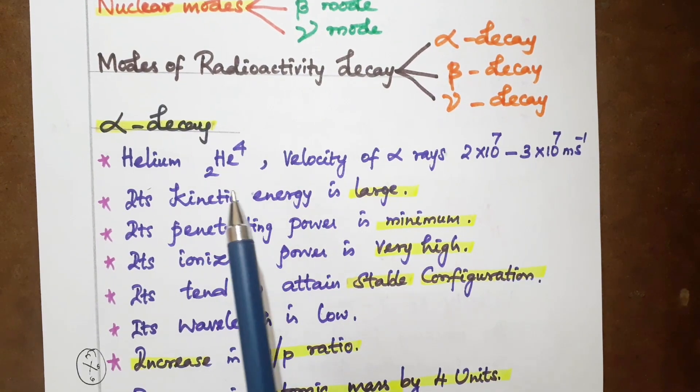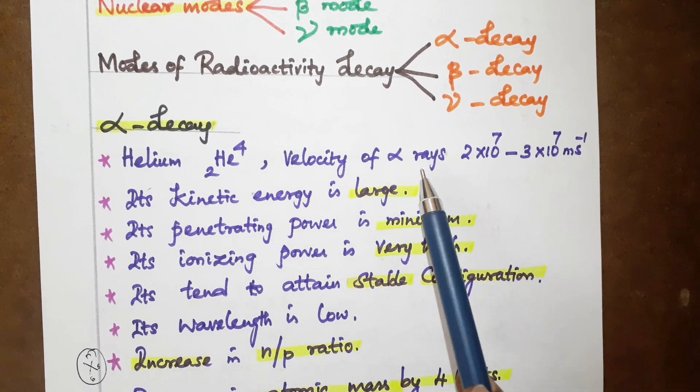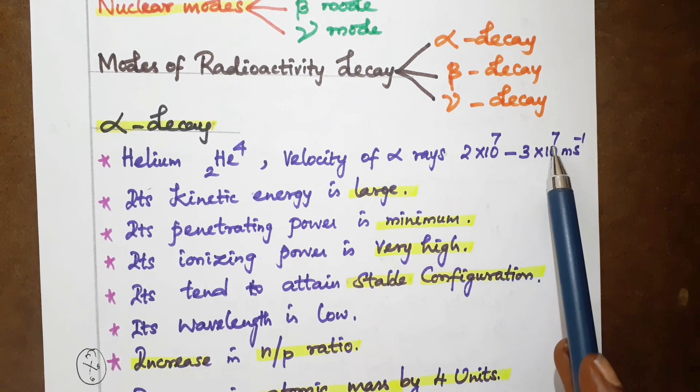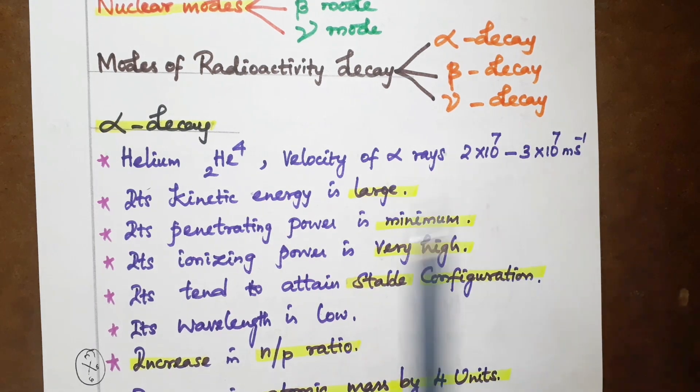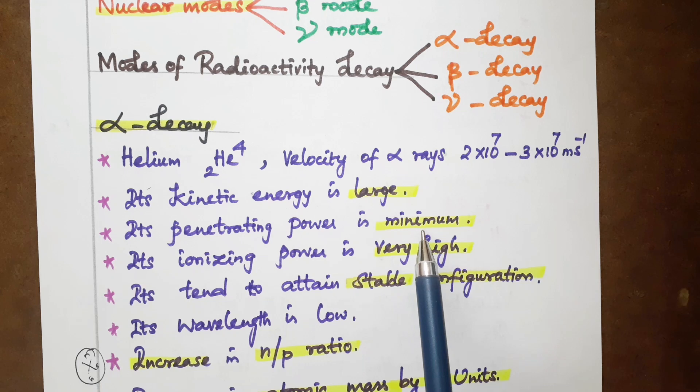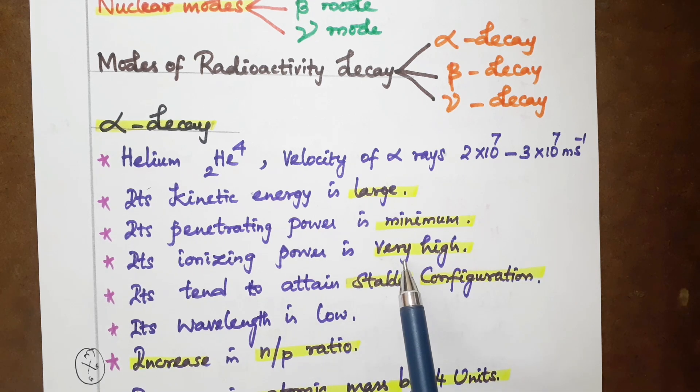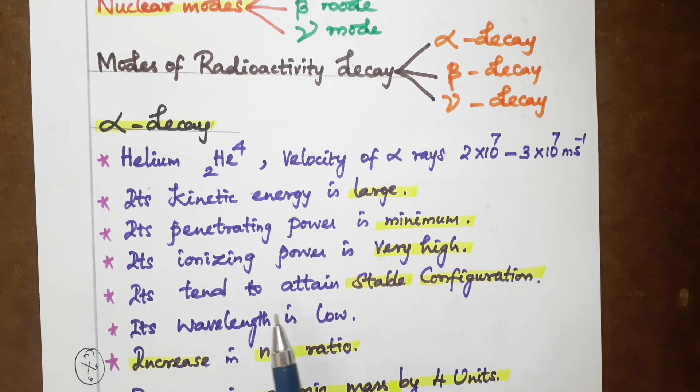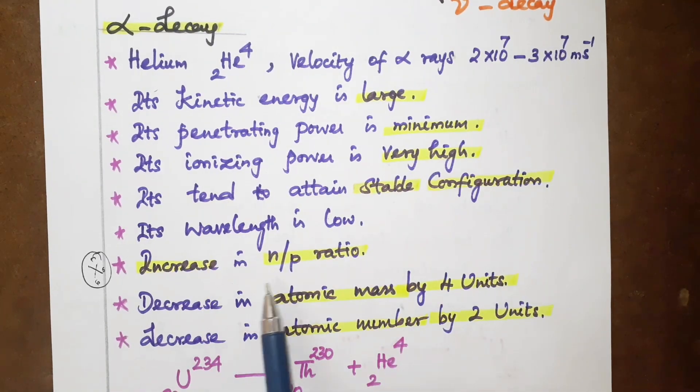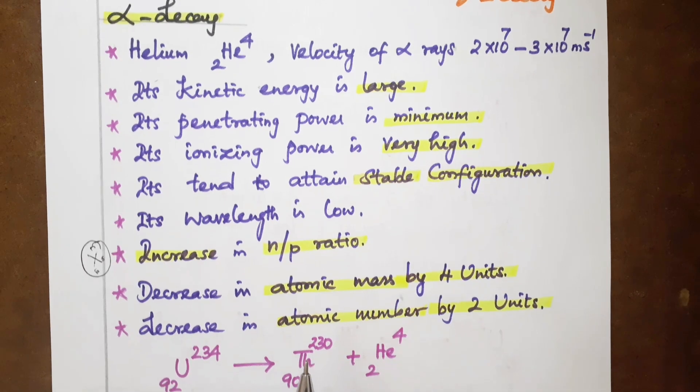We have helium He-4-2. Velocity is 2x10^7 to 3x10^7 meters per second. Kinetic energy is large. Penetrating power is minimum. Ionizing power is very high. It tends to attain stable configuration. Wavelength is low.